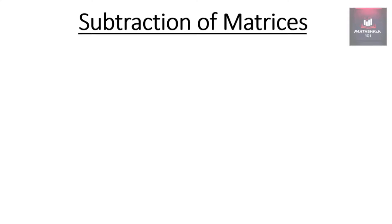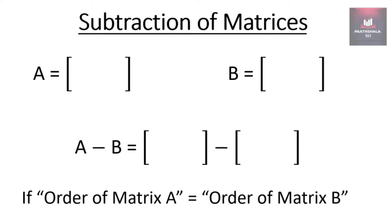Suppose there are two matrices A and B, then their subtraction, that is A minus B, is possible if order of matrix A is equal to order of matrix B.